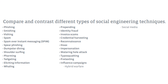Then we have identity fraud, which is stealing another person's information and taking advantage of it. If an attacker has your utility bills, a copy of your ID, and so on, they could create a new ID and impersonate someone else. Next we have invoice scams, where victims receive emails containing an invoice for something they did not purchase, and the attacker attaches a malicious attachment hoping the victim clicks on it.